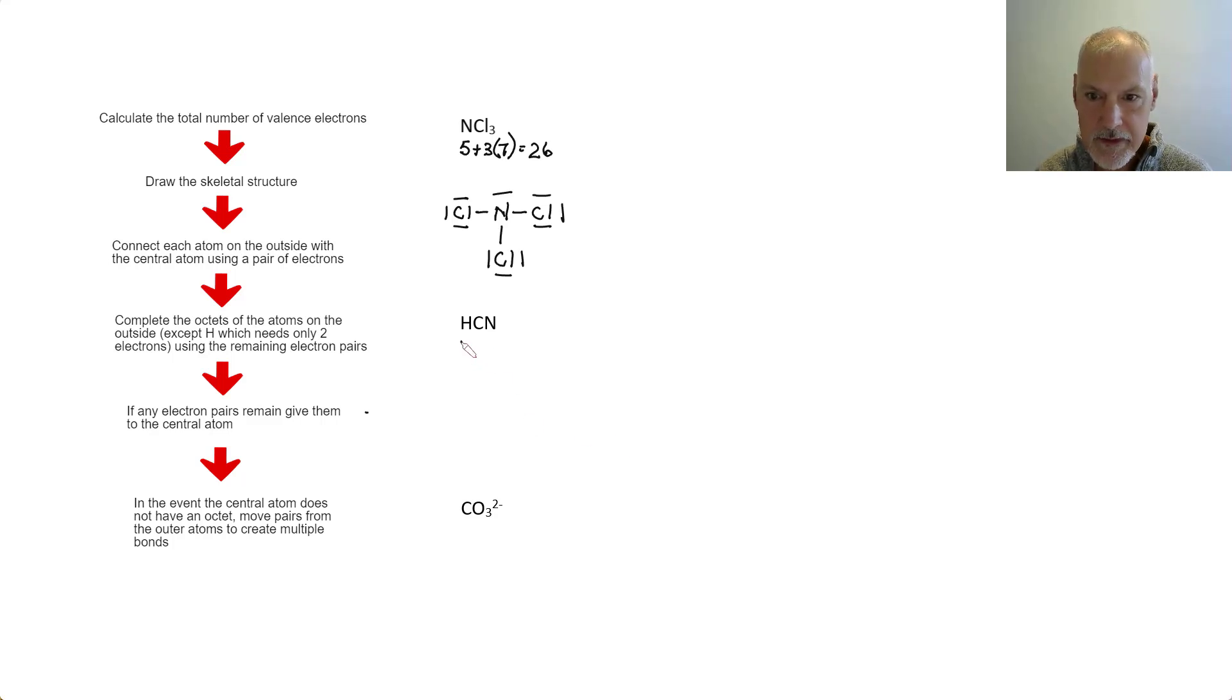We'll do the same thing with this species, hydrogen cyanide. We'll get one valence electron for hydrogen, four for carbon, and we have five for the nitrogen, giving me a total of 10 electrons or five pairs. I'll put carbon in the middle, nitrogen, and hydrogen on the other side. And the first place I put them is there.